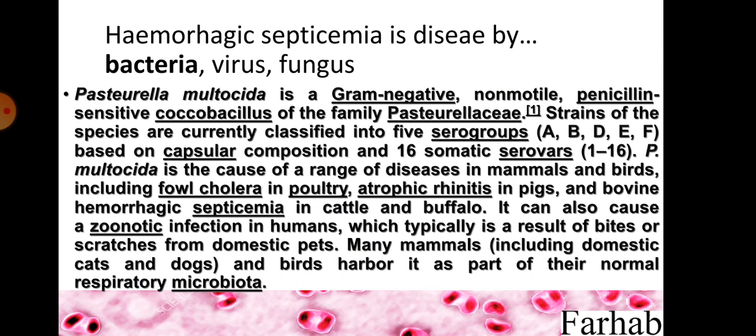Hemorrhagic septicemia is caused by Pasteurella multocida, a gram-negative, non-motile, penicillin-sensitive coccobacillus of the family Pasteurellaceae. Strains are classified into five capsular serotypes: A, B, D, E, and F (not C), and 16 somatic serotypes (1–16). Pasteurella multocida also causes fowl cholera in poultry, atrophic rhinitis in pigs, and zoonotic disease in humans via pet bites. Many mammals, cats, dogs, and birds carry it as normal respiratory microbiota.